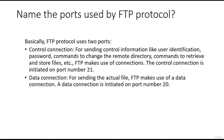What ports are used by FTP? There are two FTP ports: 21 and 20. Port 21 is used for the control connection, which handles sending control information like identification, passwords, or commands to change the remote directory. Port 20 is used for the data connection, which is for sending the actual file.